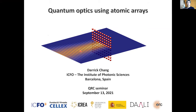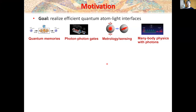So today I'm going to be talking about a topic that has interested me quite a bit in recent years, which is using ordered arrays of atoms to do quantum optics and quantum information processing. The field of quantum optics, or quantum atom-light interfaces, is huge these days, both theoretically and experimentally. That's because the ability to interface atoms and light in a quantum coherent way opens up a lot of technological possibilities.